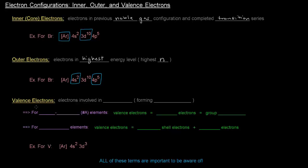So what's going on with valence electrons? Valence electrons are the electrons involved in bonding, which is basically forming compounds. And we'll talk more about that later. But that's just the definition of valence electrons.